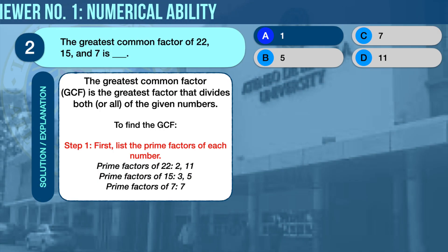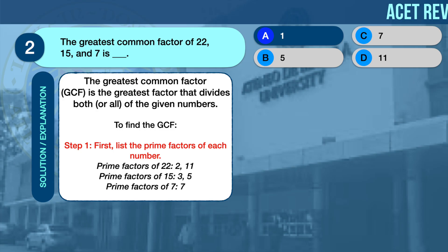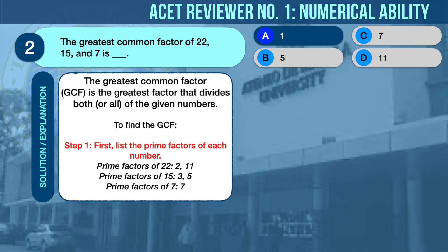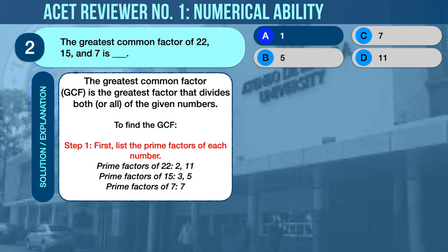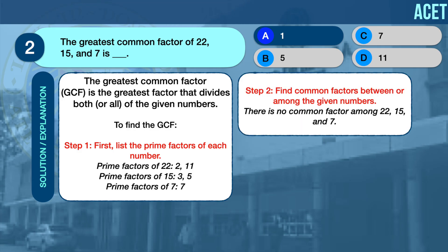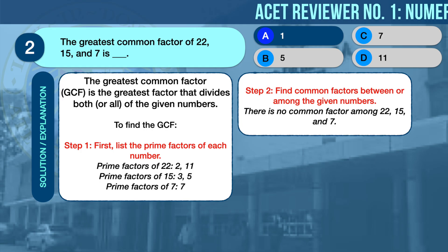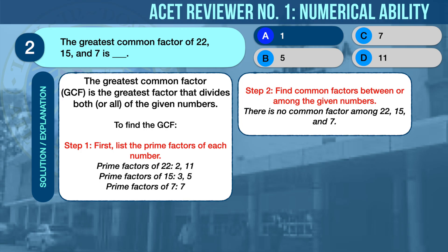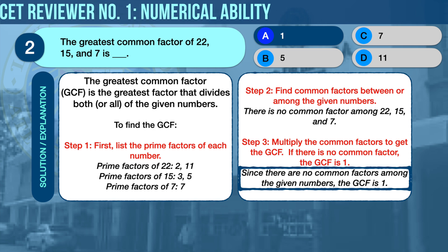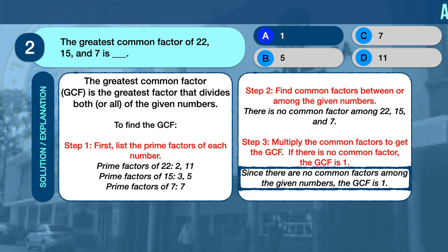The greatest common factor, or GCF, is the greatest factor that divides all of the given numbers. To find the GCF, first list the prime factors of each number. The prime factors of 22 are 2 and 11; the prime factors of 15 are 3 and 5; the prime factor of 7 is 7. There is no common factor among 22, 15, and 7. Had there been common factors, we would have multiplied them to find the GCF. In the absence of any common factor, the GCF is 1. Therefore, the correct answer is A, 1.